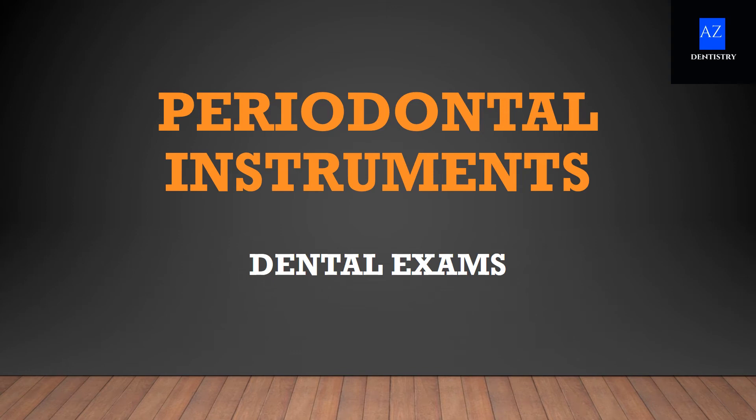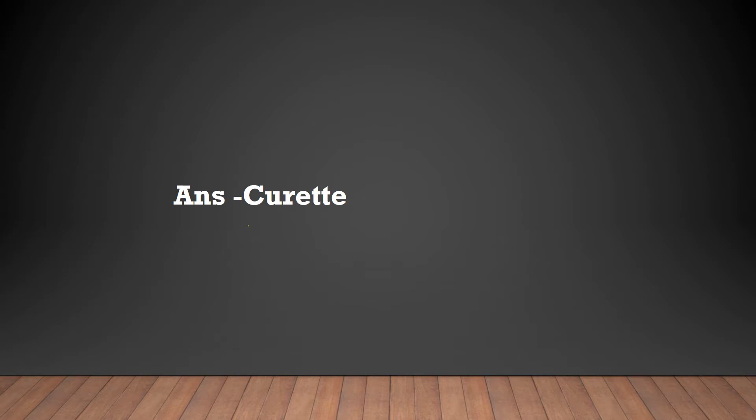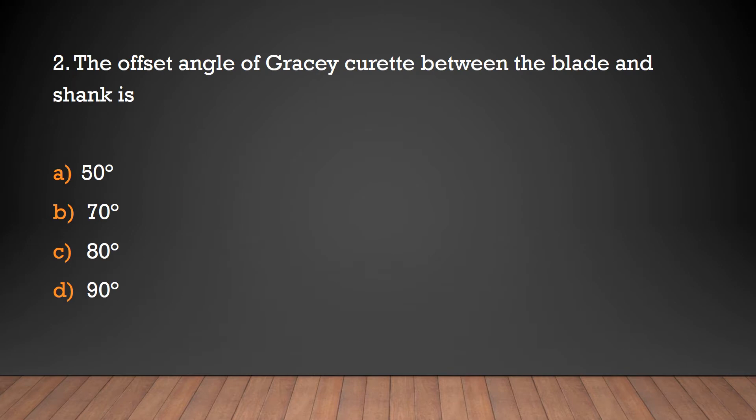Hello friends, welcome to A2C Dentistry. This video focuses on important MCQs related to periodontal instruments. The instrument best suited for root planing is: hoe, curette, scaler, or file? The answer is curette — curette is best suited for root planing.